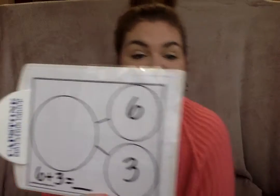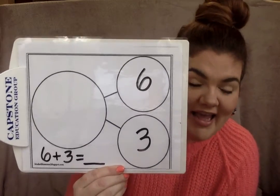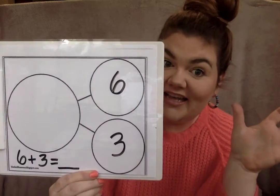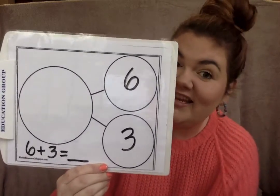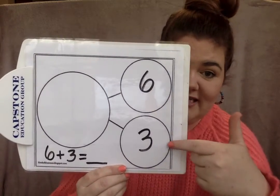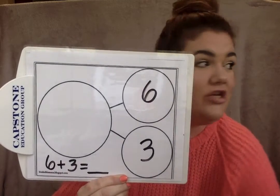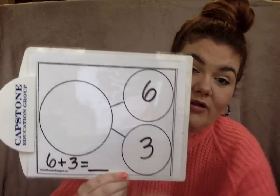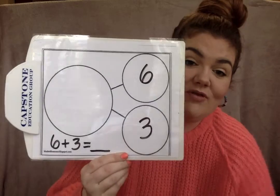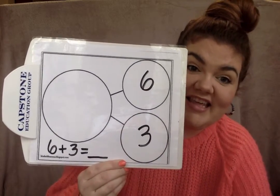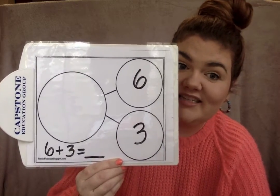We are going to fill out a number bond today and make a number sentence. I have a number bond on its side, different than yesterday, and I have the two parts filled in — six and three. You need to fill in the whole and solve the answer for the number sentence.